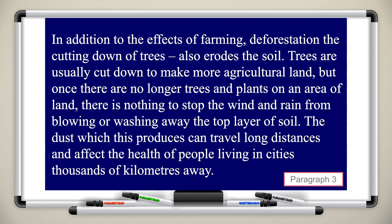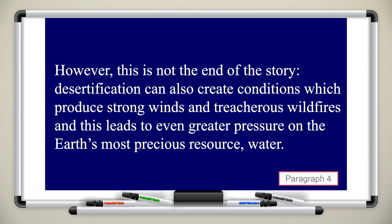Trees are usually cut down to make more agricultural land, but once there are no longer trees and plants on an area of land, there is nothing to stop the wind and rain from blowing or washing away the top layer of soil. The dust which this produces can travel long distances and affect the health of people living in cities thousands of kilometers away. However, this is not the end of the story. Desertification can also create conditions which produce strong winds and treacherous wildfires, and this leads to even greater pressure on the Earth's most precious resource — water.